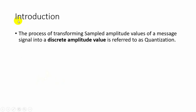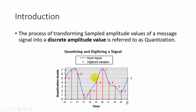The processes involved in analog to digital conversion are sampling, quantization, and encoding. Quantization is the process of transforming sampled amplitude values of a message signal into a discrete amplitude value. For example, if the sample value is greater than 7, it is quantized with the value 7. If the sample value is less than 5, it is quantized as the value 5.